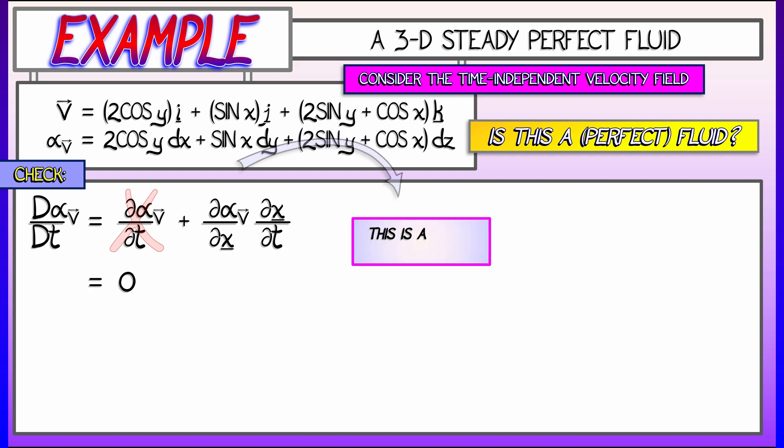This is really going to be a matrix of one forms. I'm going to have to take the partial of alpha v with respect to x, then with respect to y, then with respect to z. That first partial derivative is going to be cosine x dy minus sine x dz. Okay, well, that kind of makes sense. What happens when I take the partial with respect to y? Well, let's see. It looks like I've got two terms there as well, and those are going to be what? The first term is going to be two cosine y dz, and the second term is going to be minus two sine y dx.